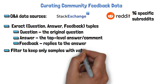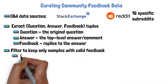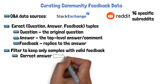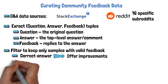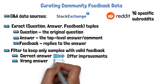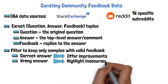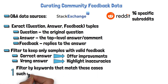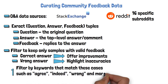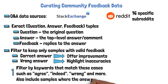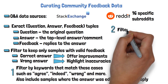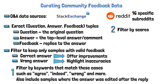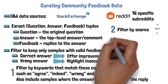This alone is not sufficient to create high-quality feedback data, so they keep only samples with feedback counted as valid. Feedback is valid in two cases: the answer is accurate and the feedback offers possible improvements, or the answer is inaccurate and the feedback explicitly highlights the inaccuracies. The first filtering step uses keywords matching these two cases — such as 'agree,' 'indeed,' 'wrong,' and more. They also include samples where an edit was added to the answer after the feedback reply, as it can imply positive feedback. The second filter is by score: each post, answer, and reply has a score, so low-scored samples are filtered out with different thresholds for each case.